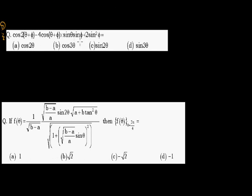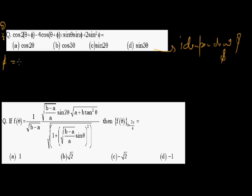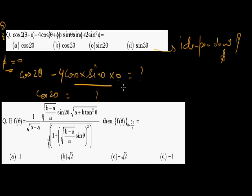Now let's come to the difficult one: cos 2(θ+φ) minus 4cos(θ+φ)·sinθ·sinφ plus 2sin²φ — what is the value? If you try to solve this normally, it will take approximately 2 to 3 minutes. But see here — in a fraction of seconds — the answer is independent of φ. So I can put any value of φ. Let φ = 0. The first term becomes cos 2θ. The middle term: minus 4·cos θ·sin θ·sin 0 = 0, since sin φ = 0. I am left with cos 2θ. And 2sin²φ = 0. So the answer is cos 2θ — answer is A.